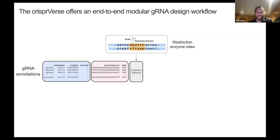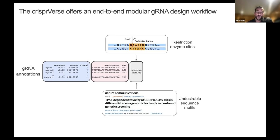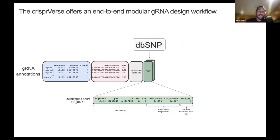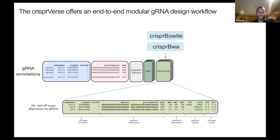The first thing we do is add annotations about the spacer sequences. We add annotations for restriction enzymes, which is important when you do cloning of the guide RNAs. We also try to keep up with the literature to add sequence features that have been discovered to be toxic in some contexts for the cells. We add SNP annotations to make sure that guide RNAs are not overlapping common SNPs, ensuring optimal binding of the nuclease to the genome.